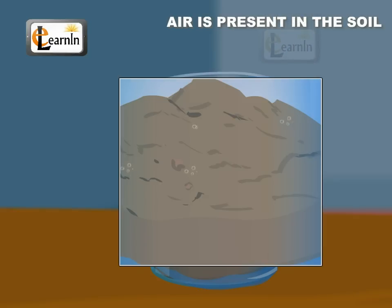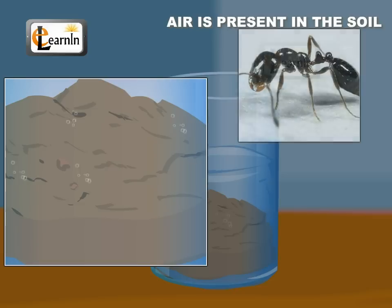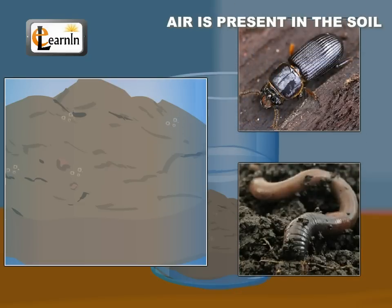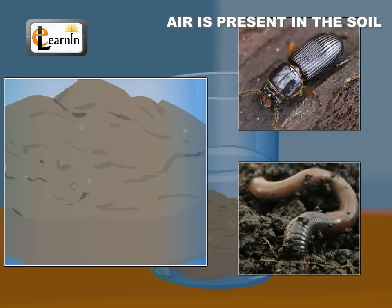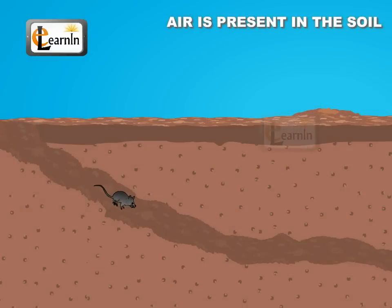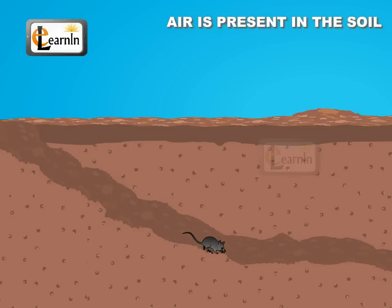This air is utilized by the organisms living in the soil, such as ants, beetles, and earthworms, to respire. The animals that live under the soil make deep holes and burrows in order to facilitate the free flow of air within the soil.